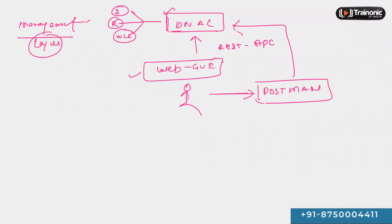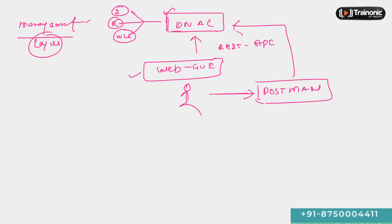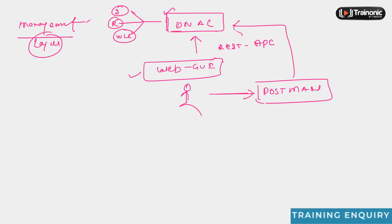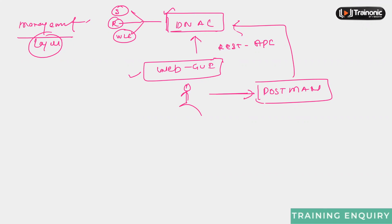So those are the four layers we see in the SDA architecture. Now we are done with the basics and we'll move on to some more technical things, such as how the control plane is based on LISP — LISP functionalities and fundamentals — and the data plane based on VXLAN — VXLAN functionalities and fundamentals.